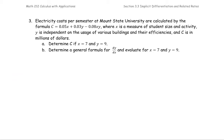In this example, electricity costs per semester at Mount State University are calculated by the formula C equals 0.05 times X plus 0.03 times Y minus 0.08 multiplied by X and Y, where X is a measure of student size and activities, Y is independent on the uses of various buildings and their efficiencies, and C is in the millions of dollars.